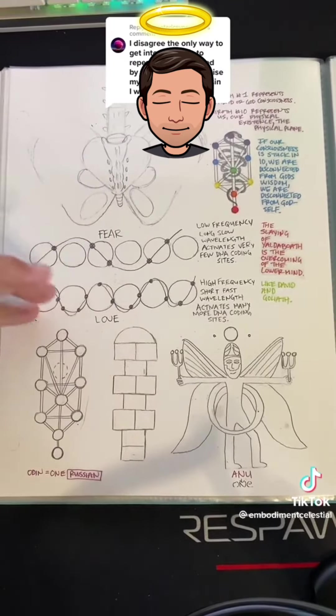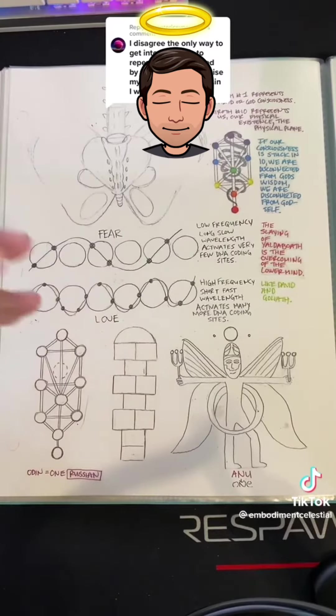When you're in a state of fear, your DNA shuts down. Experiencing anxiety, depression, grief. These are all low frequencies that shut down your DNA.